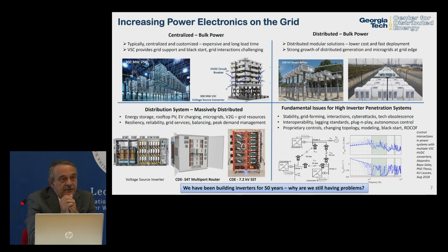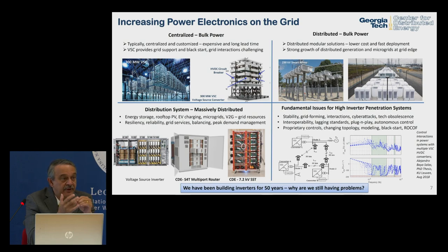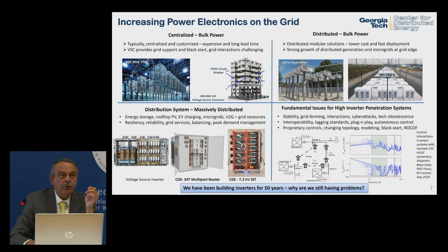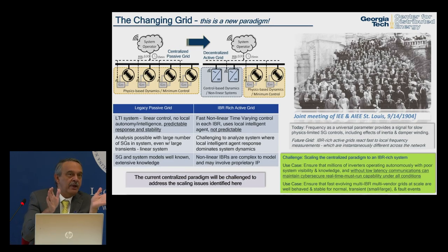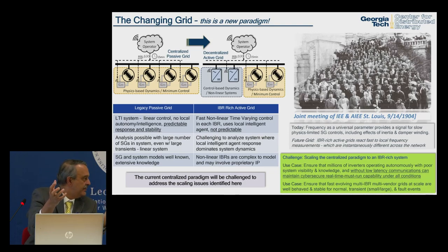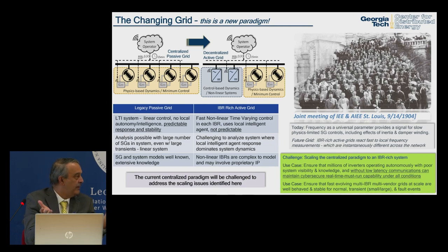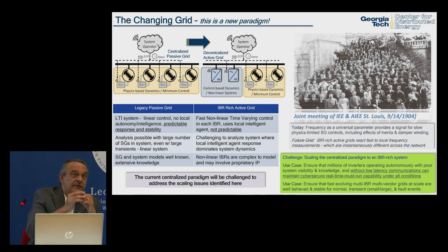We're seeing stability problems in high-inverter-penetration systems. One of the largest grid operators in Europe says they can't even get a system with five inverters to stay stable. The new paradigm: the existing grid is large synchronous generators — passive, mechanical — with a system operator 15 minutes away doing optimization and dispatch. We are moving to a decentralized active grid with intelligent inverters having fast response capability sitting at the edge.